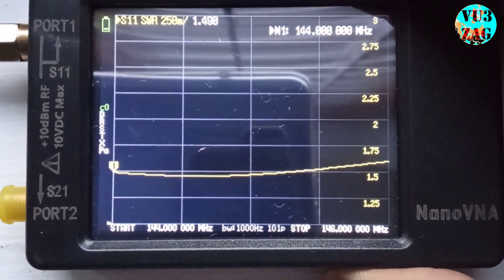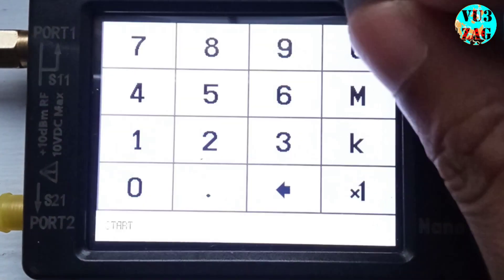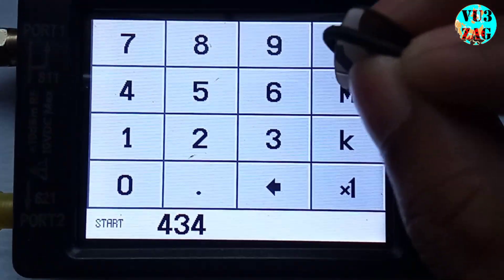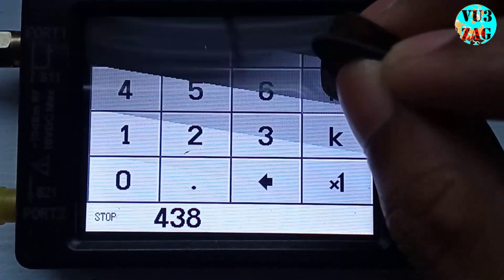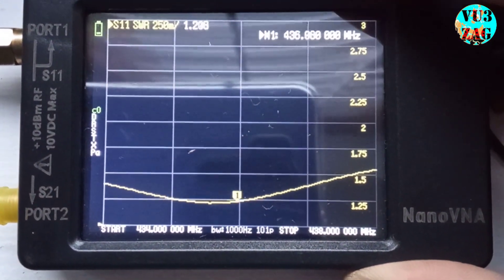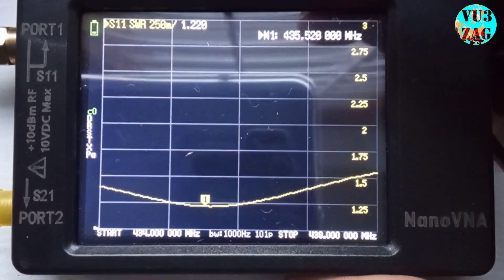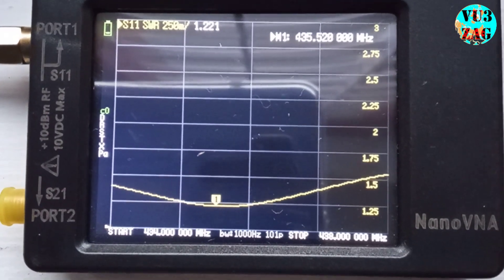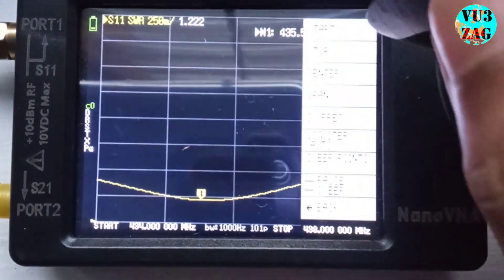The SWR extends up to 1.5. This antenna enables me to communicate seamlessly with local repeater stations and simplex channels. Now moving to UHF band with starting frequency of 434 MHz and stop frequency of 438 MHz. The SWR is around 1.3 on average, extending up to 1.5. This antenna enables me to communicate seamlessly with local repeater stations and simplex channels using my 4W handheld radio.